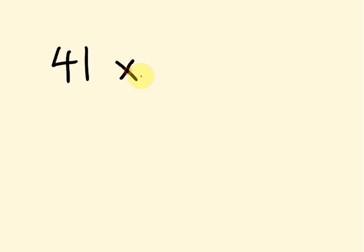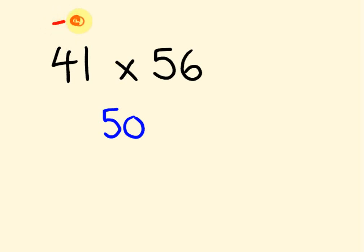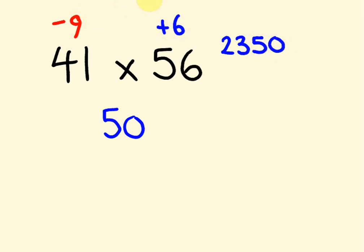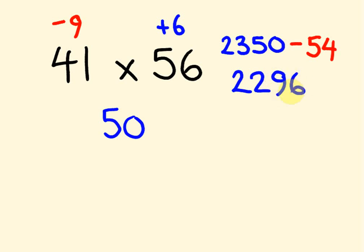One more example — then I'll give you a bunch of questions to attempt. Let's do 41 times 56. Using base 50, this is 9 less than 50 and this is 6 more than 50. So 41 plus 6 is 47. Times by 100: 4,700. Halve that to get 2,350. Then 6 times negative 9 gives negative 54. So 2,350 take away 54 gives the answer 2,296.